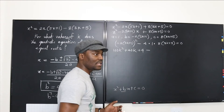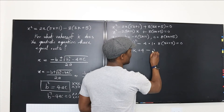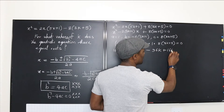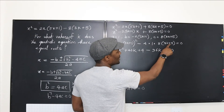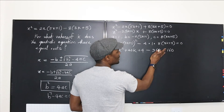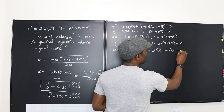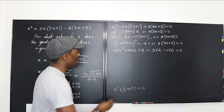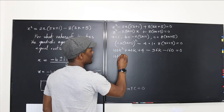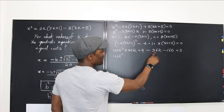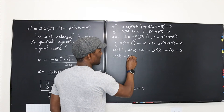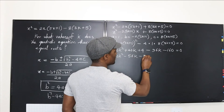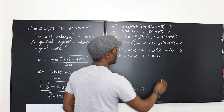32 times 3 is 96, so you have 96k; plus 32 times 5 is 160. This side distributes as a negative, so that becomes negative. Collecting like terms: 100k² plus 40k minus 96k gives minus 56k, and plus 4 minus 160 gives minus 156, all equal to zero.